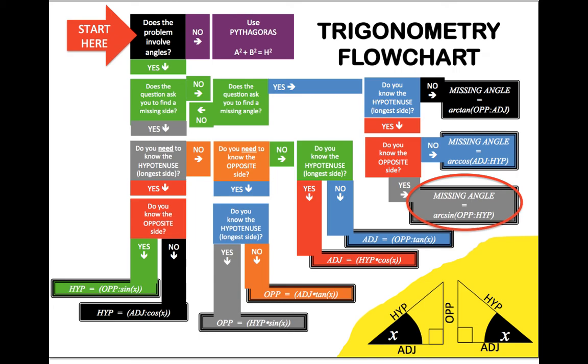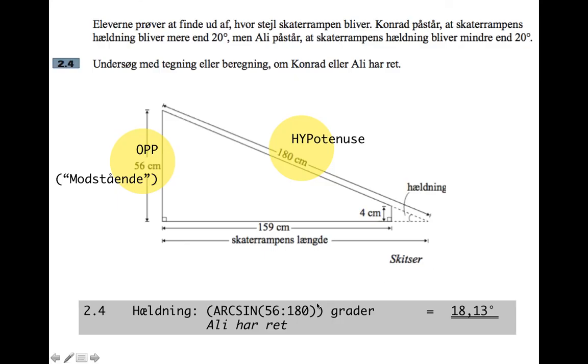So the missing angle is going to be the arc sine or inverse sine of the opposite divided by the hypotenuse. So working that out, we've got the gradient is the arc sine or inverse sine of 56 divided by 180, and that works out to 18.13. So the angle in there is 18.13 and Ali was right. Remember to make the comment.